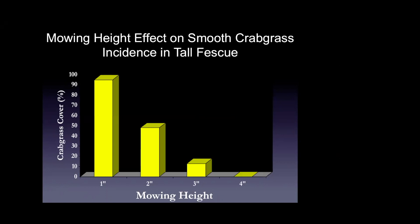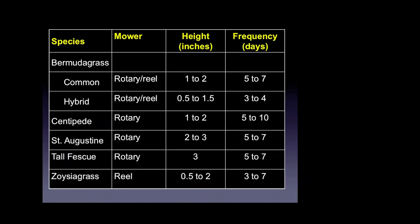A study conducted in North Carolina looked at four different mowing heights of tall fescue versus percent crabgrass cover. When they raised the mowing height from one to four inches, crabgrass population cover dropped from 95 percent to basically zero. As tall fescue height increased, it became more competitive and shaded out crabgrass, preventing its emergence. Mowing height and frequency are very critical — they affect the competitive growth of turfgrasses and can help reduce weed populations and the need to apply herbicides.